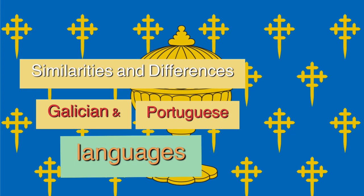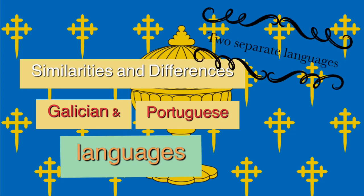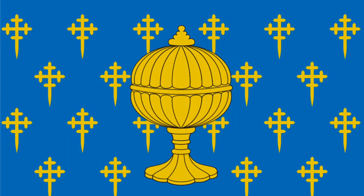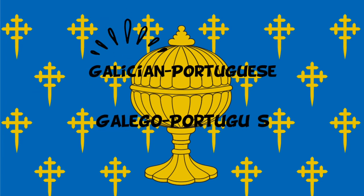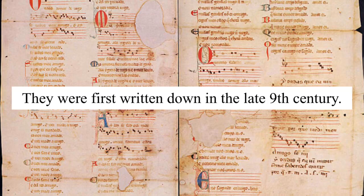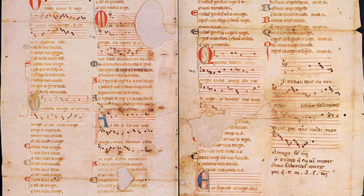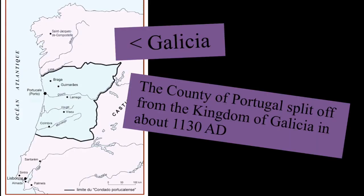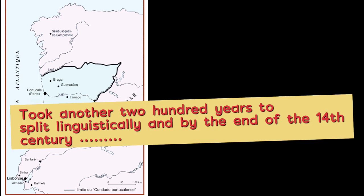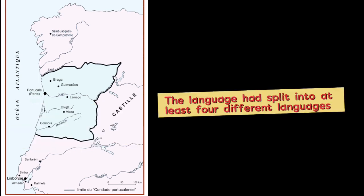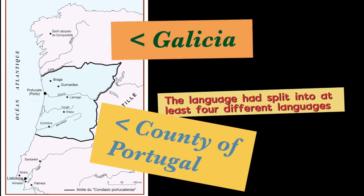For the purpose of this video, we treat the two varieties as two separate languages. The two languages came from a form known as Galician-Portuguese or Galego-Portuguese and were first written down in the late 9th century. The county of Portugal split off the kingdom of Galicia in about 1130 AD. After this political split, the two languages began to diverge, and by the end of the 14th century, the language had split into at least four different languages.